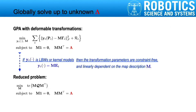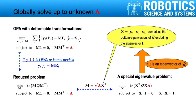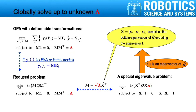By putting things together, we have the overall formulation for GPA with deformable transformations. This problem can be solved globally up to an unknown lambda, and we can determine lambda afterwards with additional assumptions. To solve this, we first reduce the above to an optimization problem of M only. Applying variable replacement, we see the reduced problem is a special eigenvalue problem. This eigenvalue problem has a closed-form solution if the all-ones vector is an eigenvector of Q, which is true for LBWs and kernel-based models, as we can prove Q times 1 equals 0.